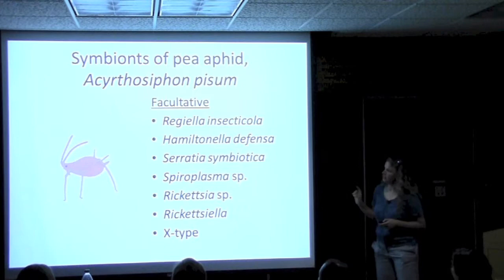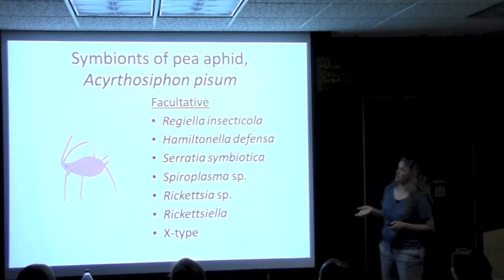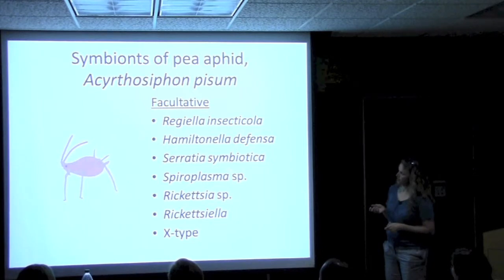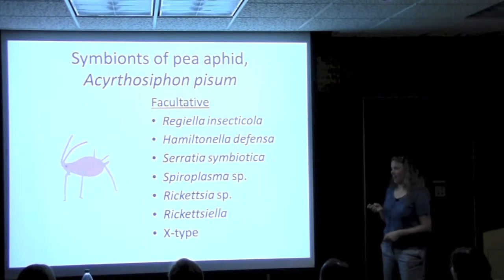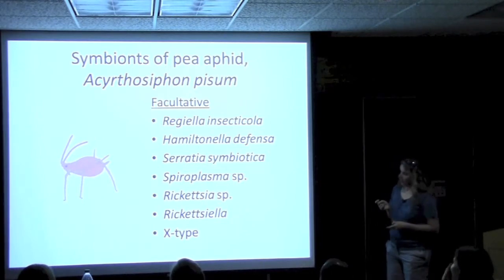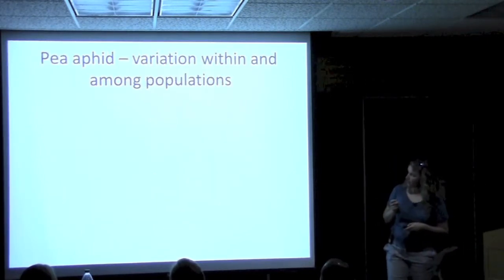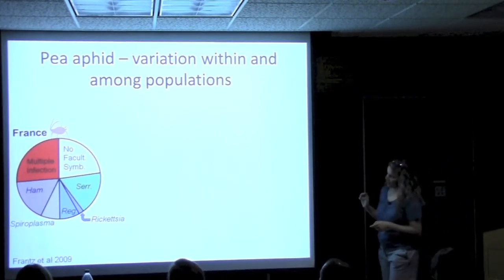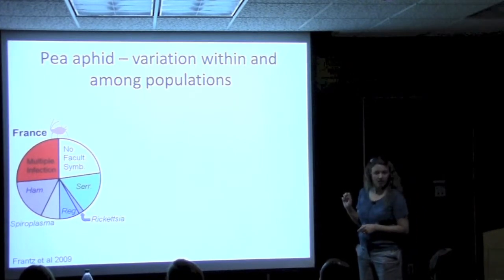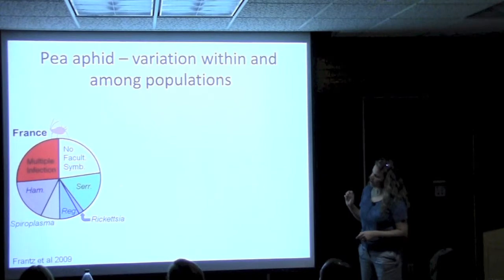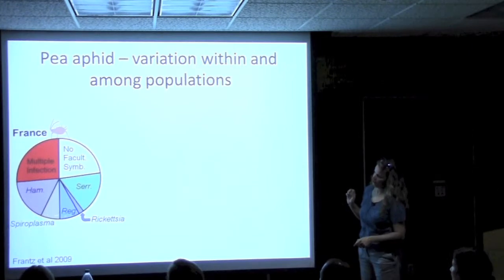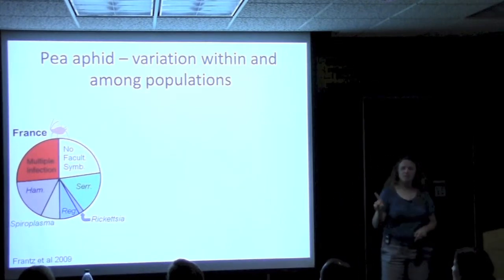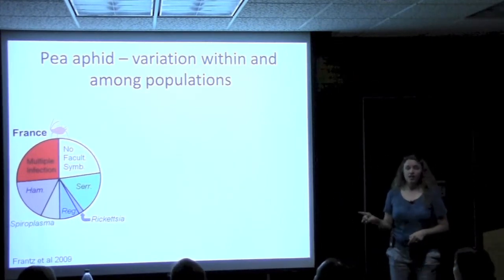The pea aphid has an exceptional number of different facultative symbionts. In addition to the big three, there's Spiroplasma, Rickettsia, Rickettsiella, and the mysteriously named X-type. A very nice survey from France et al. — appropriately in France — found about a quarter of aphids had no symbiont at all; of the remainder, about half were split with Serratia and Hamiltonella at highest frequency, Spiroplasma and Regiella a bit less; and a full quarter were multiply infected, where the same individual aphid had more than one bacterial symbiont — an important point.